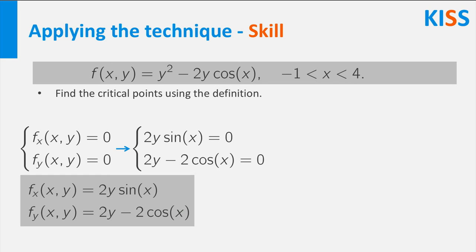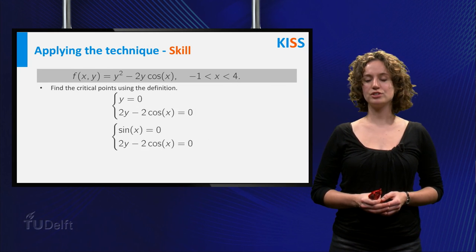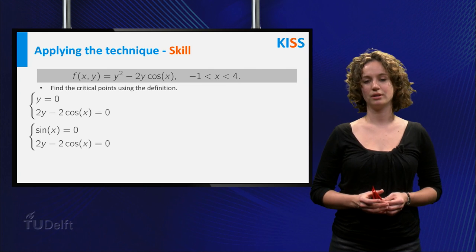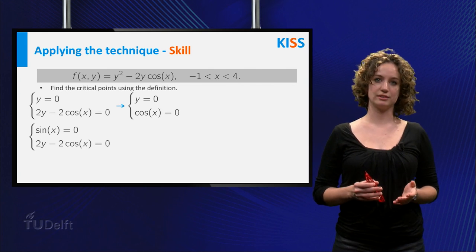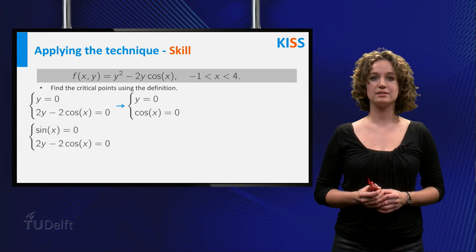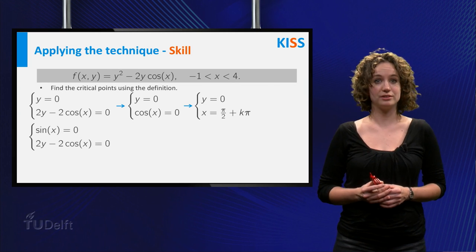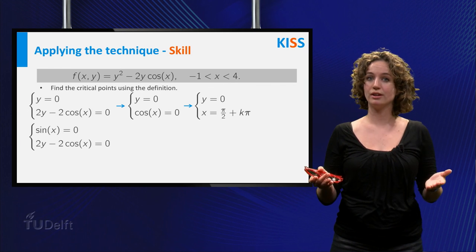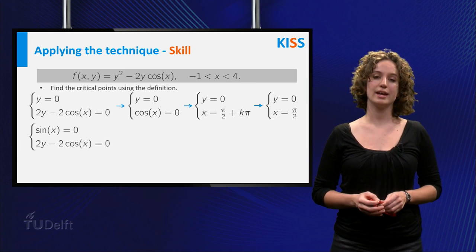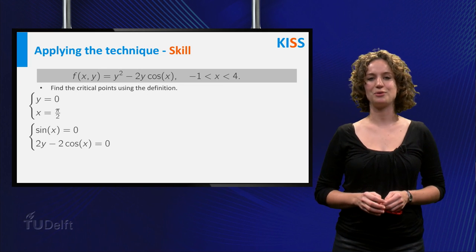If 2y sine of x equals zero, then either y equals zero or sine of x must equal zero. First, look at the set of equations where y equals zero. Using the first equation to simplify the second, you get that cosine of x must equal zero, which means x equals pi over 2 plus k times pi. However, x is restricted to the domain minus 1 to 4, so you get y equals zero and x equals pi over 2. This is your first critical point.